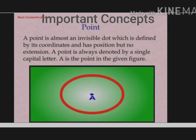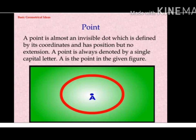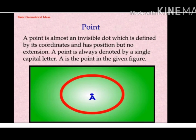A point is almost an invisible dot which is defined by its coordinates and has position but no extension. A point is always denoted by a single capital letter. See the A point.